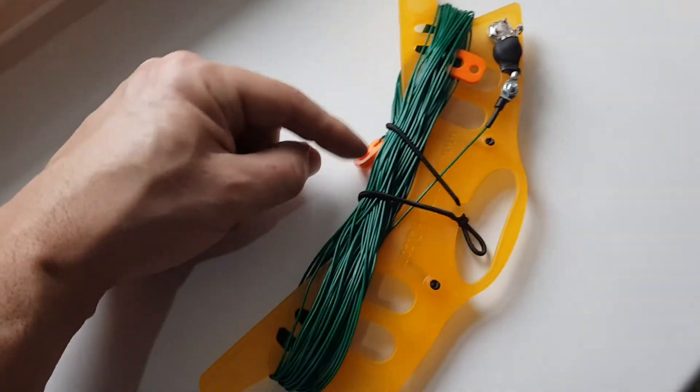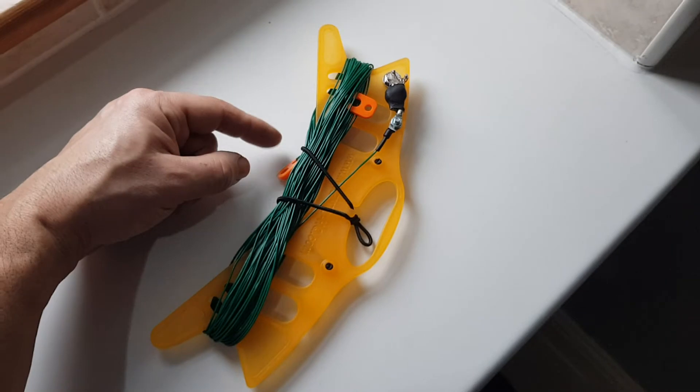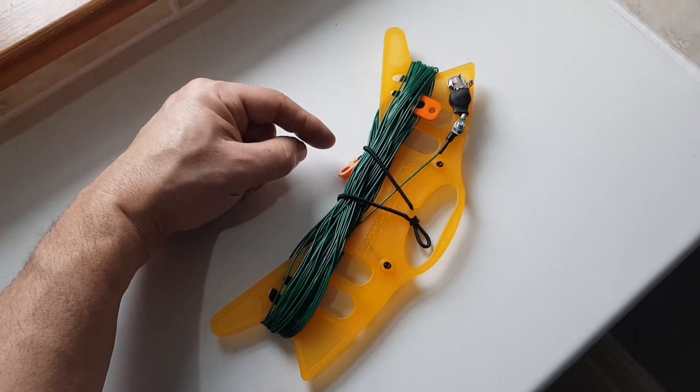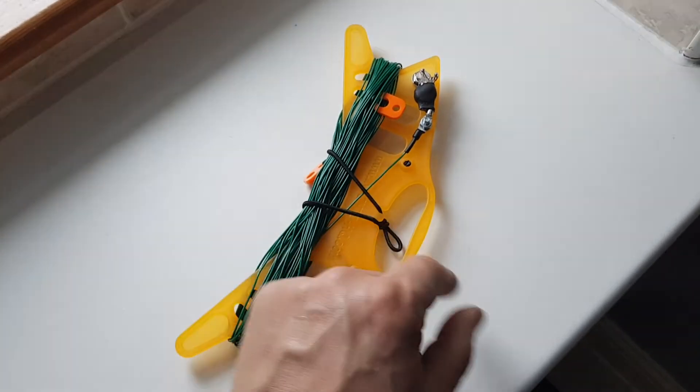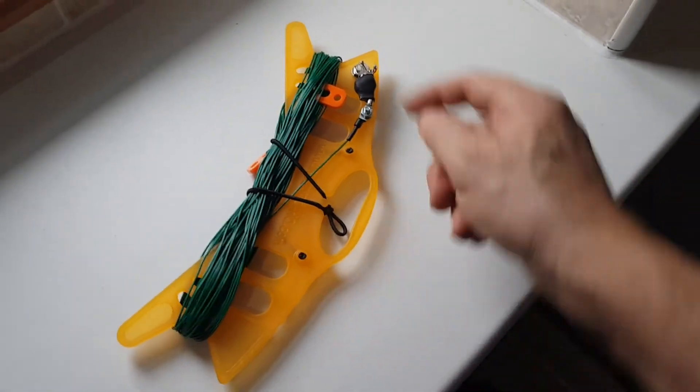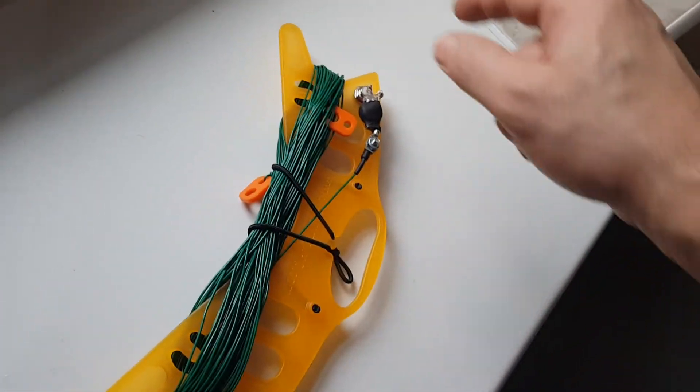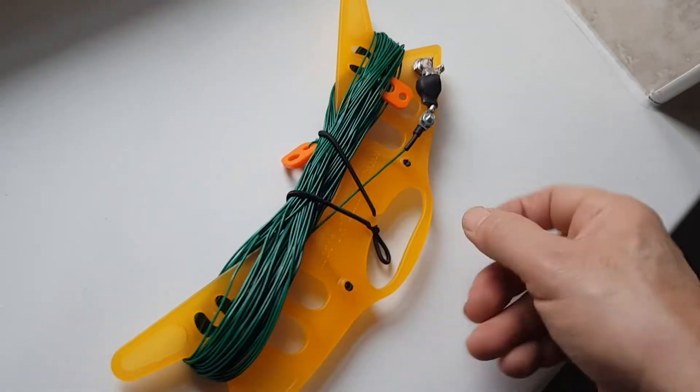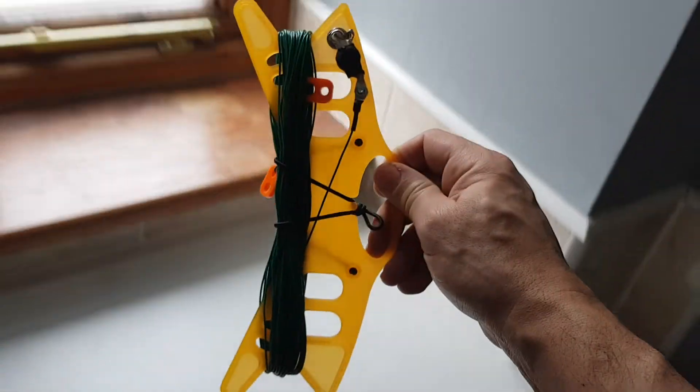...then you can just hold this section because it's been wound in a figure of eight. So you just hold this section and walk backwards and it will unwind.